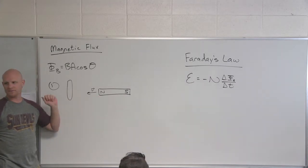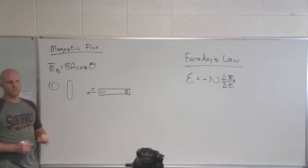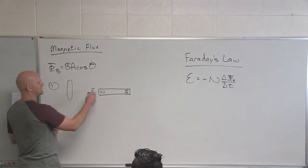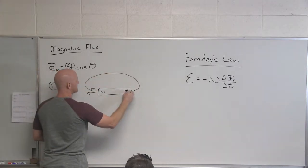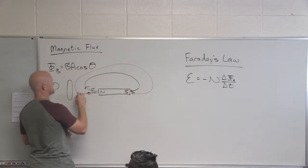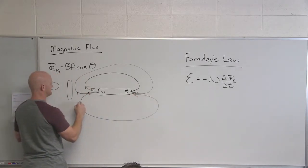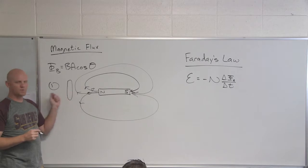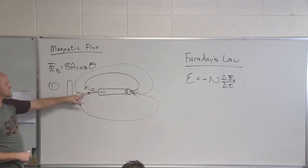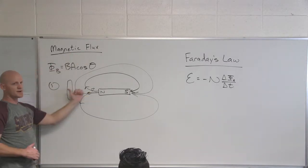Due to this bar magnet, what direction does the magnetic field we feel at this loop point? Magnetic field lines outside a magnet go from north to south, going down around the other side as well. So at the point where this loop is located, the field is going to point to the left.